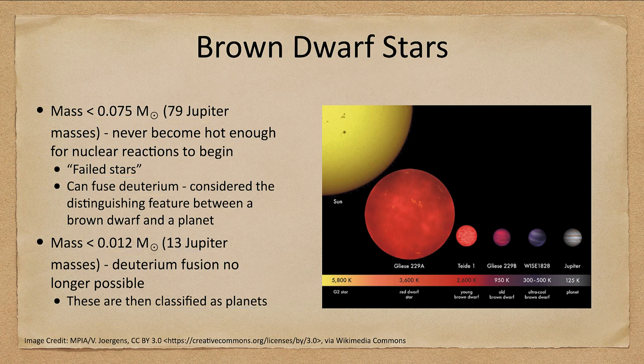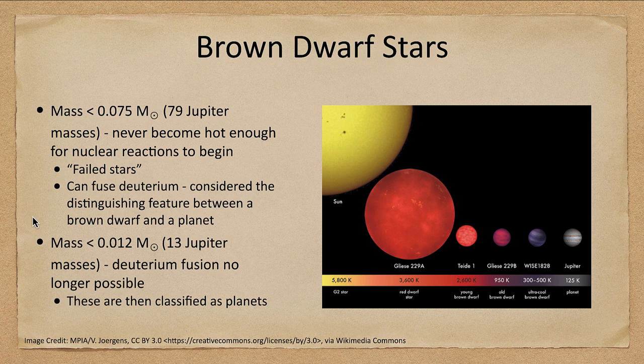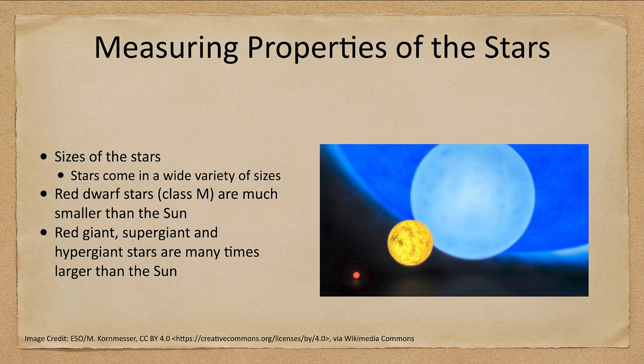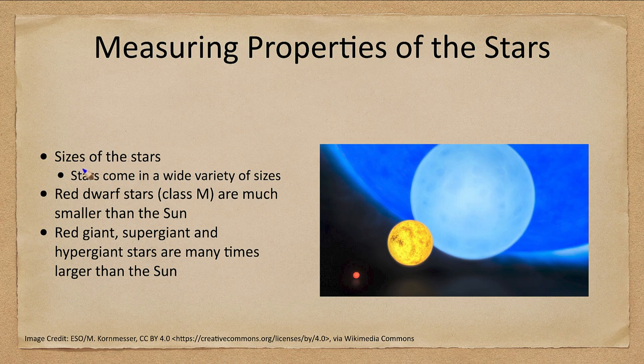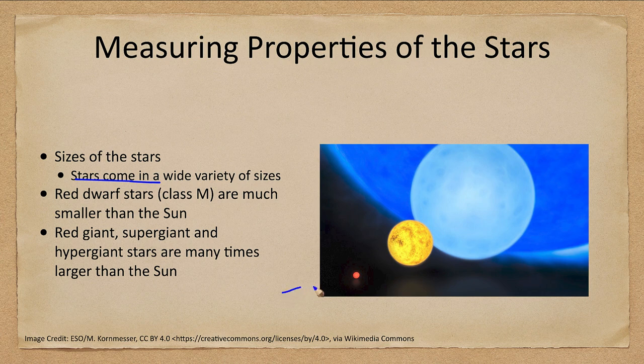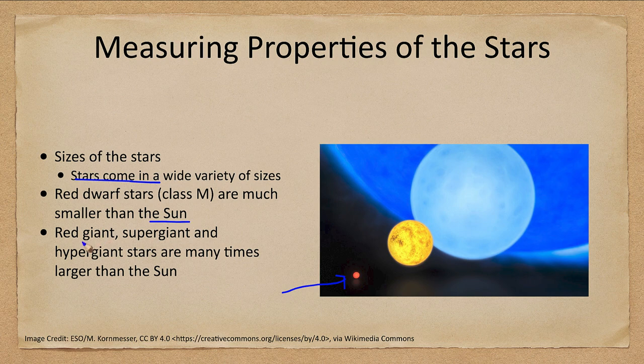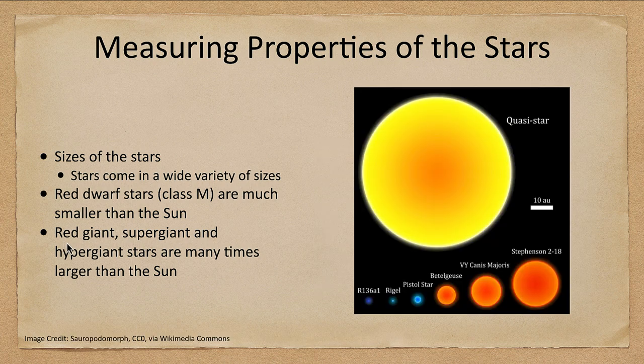So how do we measure some of these properties of stars that we see? Well sizes, how can we measure the size of the stars? Stars come in a wide variety of sizes from tiny red dwarf stars. These red dwarf stars are much smaller than the sun, but we also have red giant, supergiant, and hypergiant stars that are many times larger than the sun.